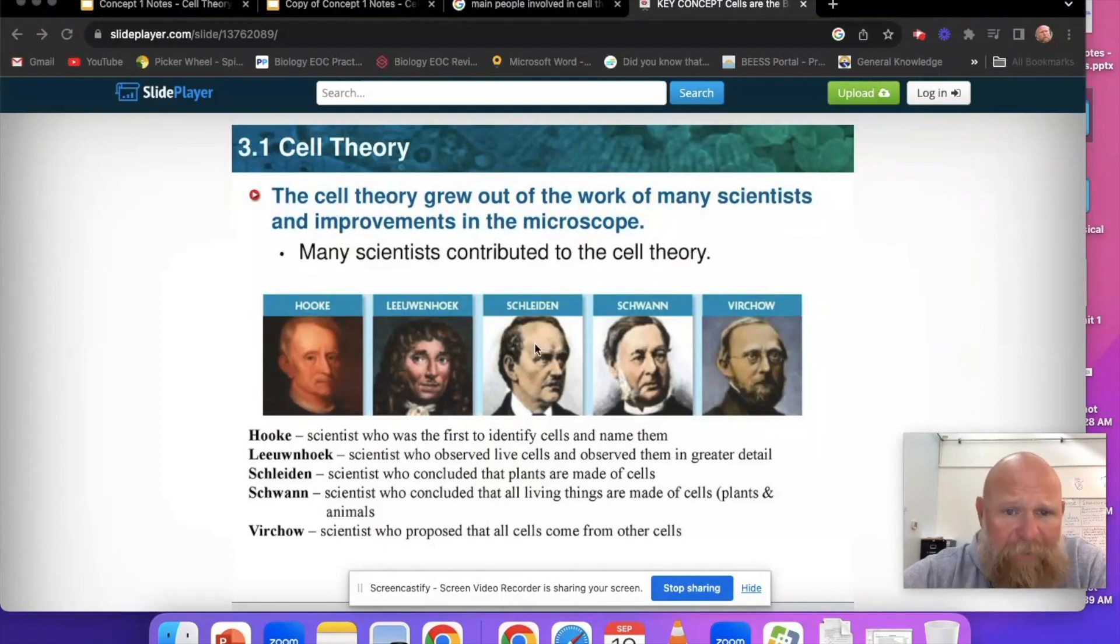Then you have Schleiden, who concluded that plants are made of cells. Then you move on to Schwann, the scientist who concluded that all living things are made of cells, plants and animals. Then you have Virchow, the scientist who proposed that all cells come from other cells.